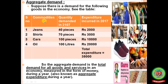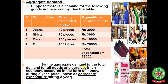Let's understand aggregate demand with the help of a table. Suppose in an economy there are different people demanding different commodities like jeans, shirts, car, and oil in different quantities. In order to satisfy their demands they incur expenditure on these goods and services. The total expenditure in the economy for aggregate demand is Rs 35,000. So aggregate demand is the total demand for all the goods and services in an economy, and the expenditure incurred on the purchase of these goods and services is measured in the form of money — that is the aggregate expenditure during a year.